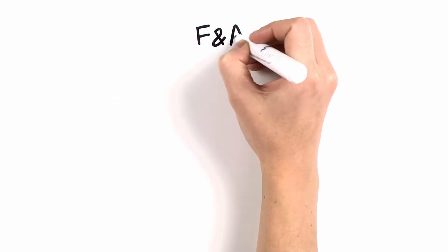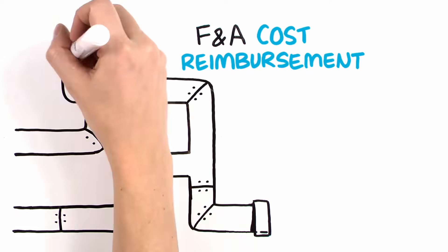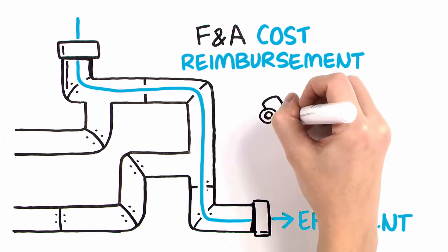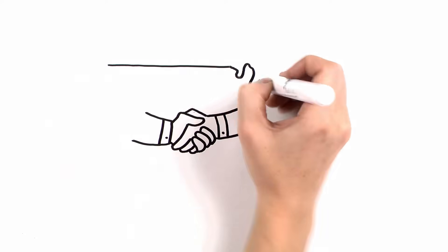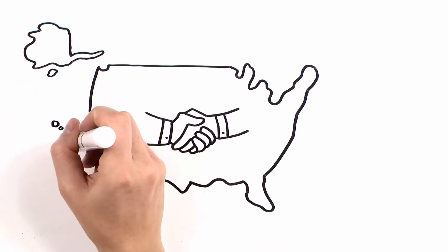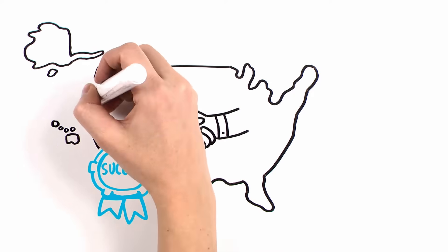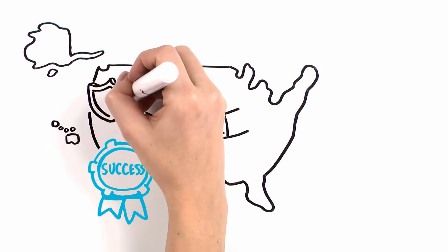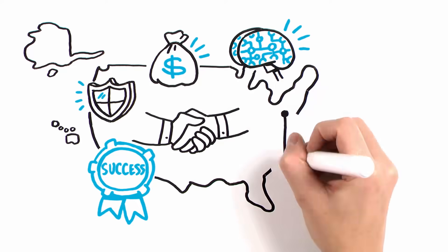Although the F&A cost reimbursement process is complex and not always easy to understand, it is efficient and based on actual research costs. Moreover, it has allowed the decades-long partnership between universities and the federal government to work. That partnership has been central to the country's national security, economic growth, technical innovation, and medical advances.